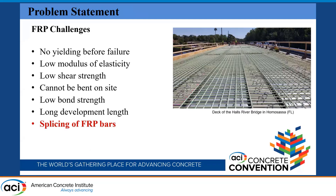FRP bars have a couple of challenges: they have low bond strength because of their anisotropic nature, and also they cannot be bent in the field. These limitations affect situations where the bars need to be spliced to another bar or bent at the construction site, and this is one of the major limitations of FRP bars in the field.